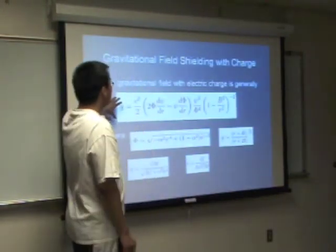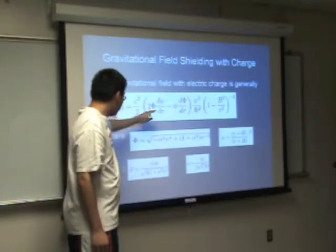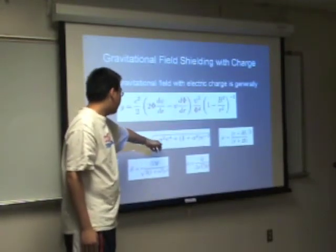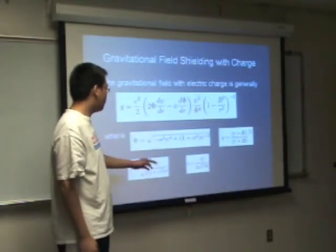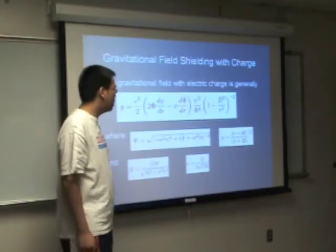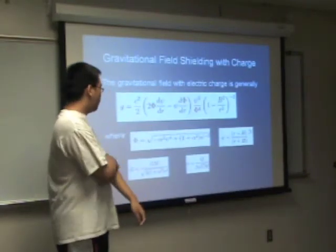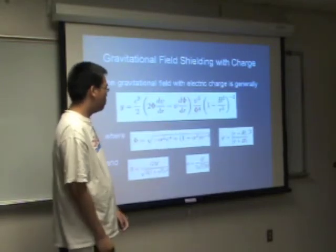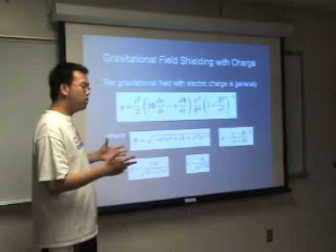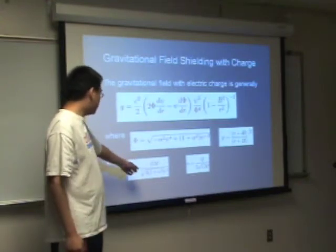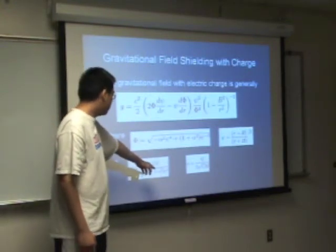This is the general gravitational field shielding with charge. This is phi, the scalar field, which is equal to the square root of negative alpha squared times psi to the power of 4 plus 1 plus alpha squared times psi to the negative 2. And psi is (r minus b over r plus b) all to the power 1 over root 3. And b is the critical radius that I said last time, which is equal to g times m over the square root of 3 times (1 plus alpha squared) times c squared.